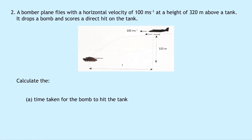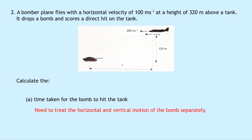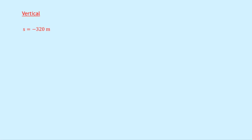Question 2 says a bomber plane flies with a horizontal velocity of 100 meters per second at a height of 320 meters above a tank. It drops a bomb and scores a direct hit on the tank. The bomb travels at the same initial horizontal velocity as the plane because it's attached to it. The vertical height is 320 meters and we don't know the horizontal range yet — chances are we'll be asked to calculate that. Part A asks to calculate the time taken for the bomb to hit the tank.